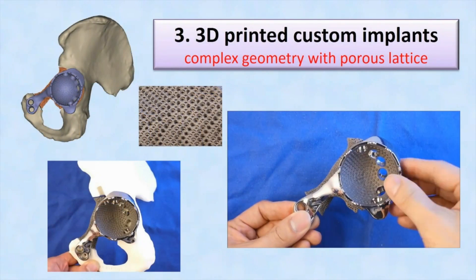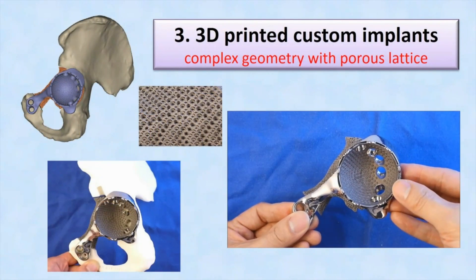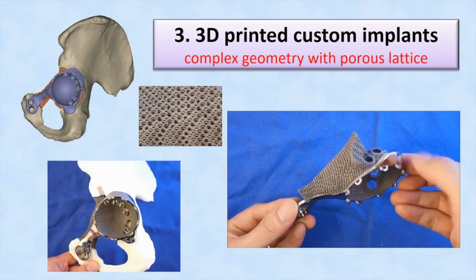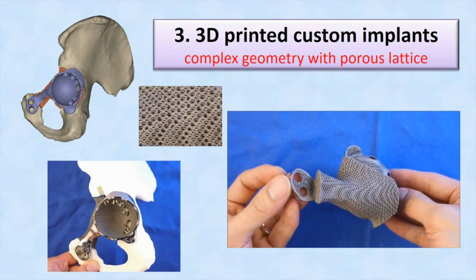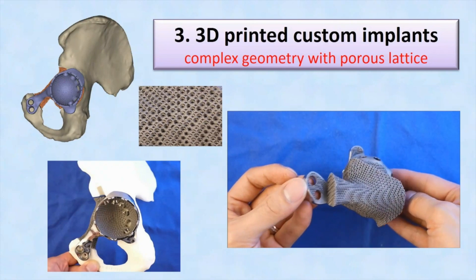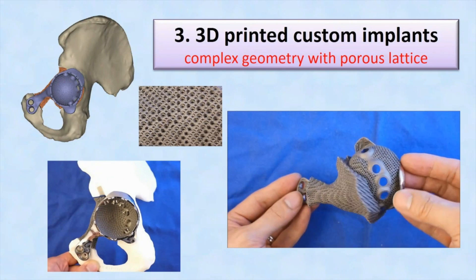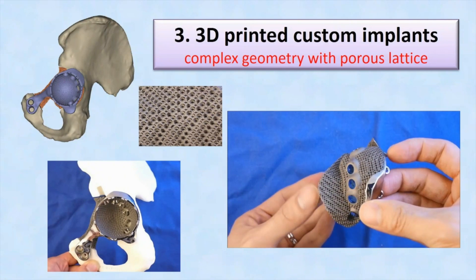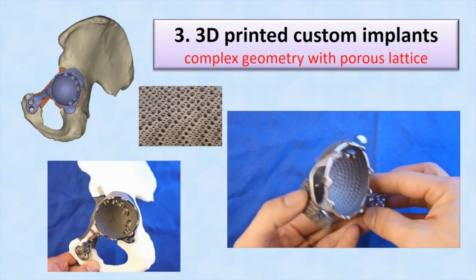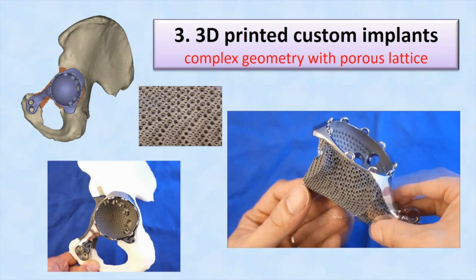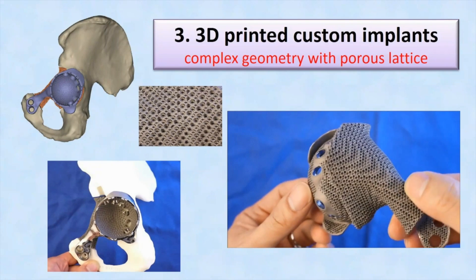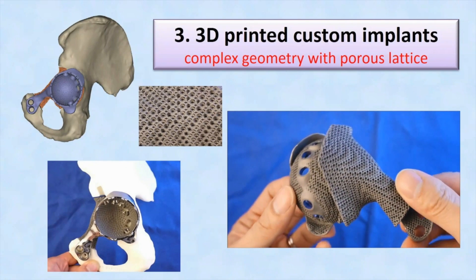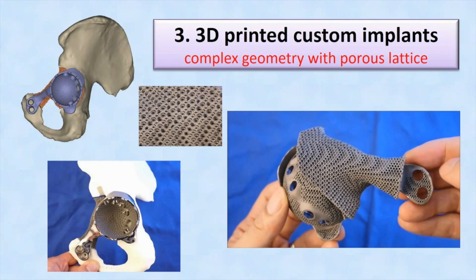The most advanced application is 3D printed custom implants that are anatomically matched to a patient's surgical requirements. 3D printing can fabricate complex geometry with porous structures that may facilitate osseointegration and reduce implant stiffness.